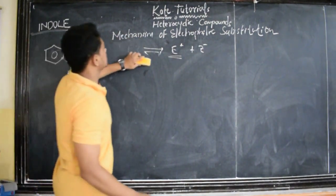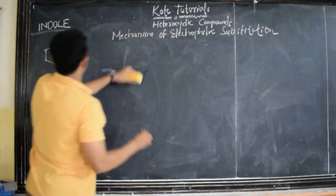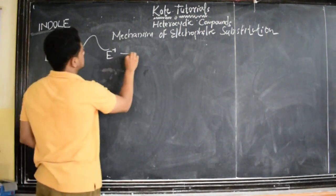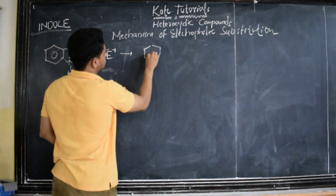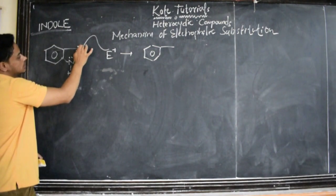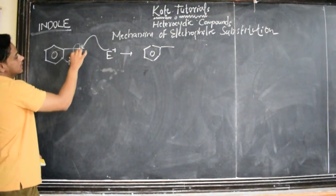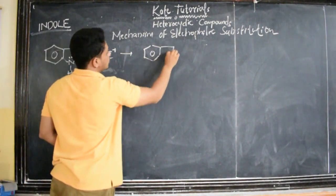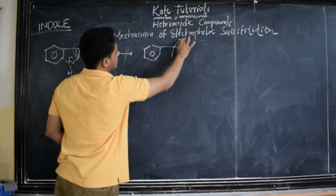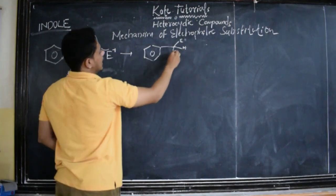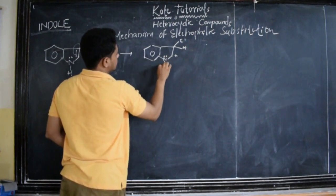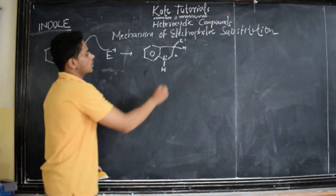So, these electrophiles are going to attack the third position. If this electrophile attacks the third position, see what happens. This is our benzene ring and this is the pyrrole ring. It attacks the third position, which is electron rich, and that position becomes electron deficient. So, E+ becomes neutral E and the carbon gets a positive charge, with nitrogen here like this.